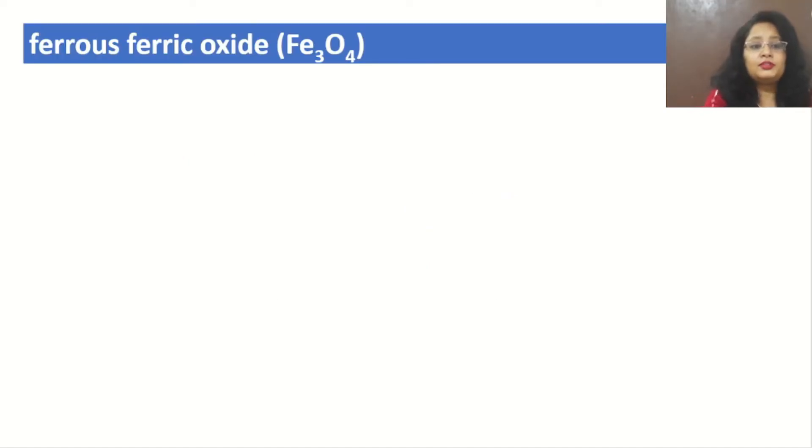First of all, Fe₃O₄ is generally called ferrous ferric oxide, and we need to find the oxidation state with the help of the structure only.